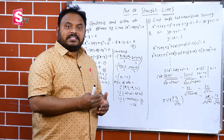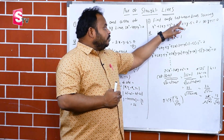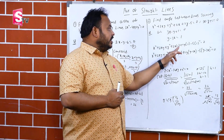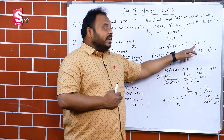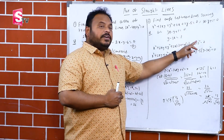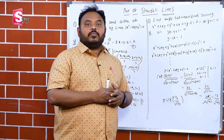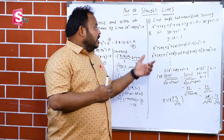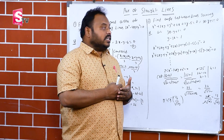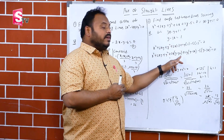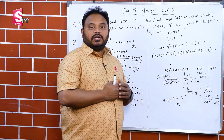Homogenization means making all powers in the equation equal. The curve has terms of degree 2, while 2gx and 2fy are degree 1 and c is degree 0. We substitute 1 = (y−3x) wherever needed to equalize powers. In place of 1, we substitute (y−3x), and for the constant term, (y−3x)². After expanding and simplifying, we get 25x²−14xy+y²=0.